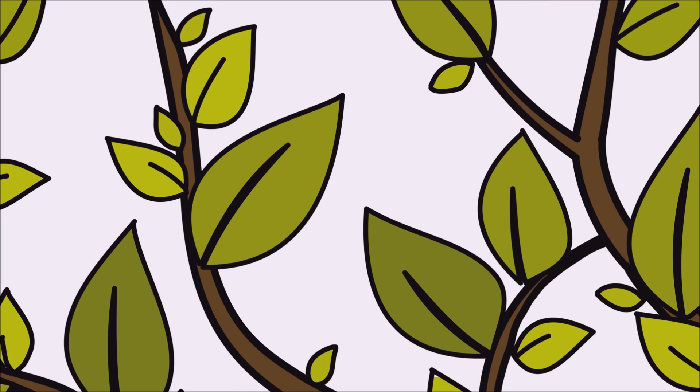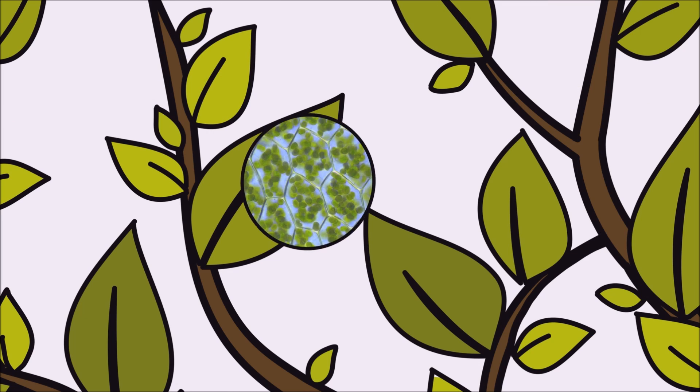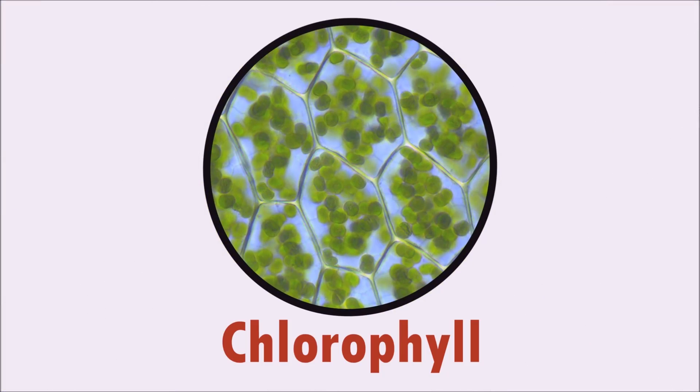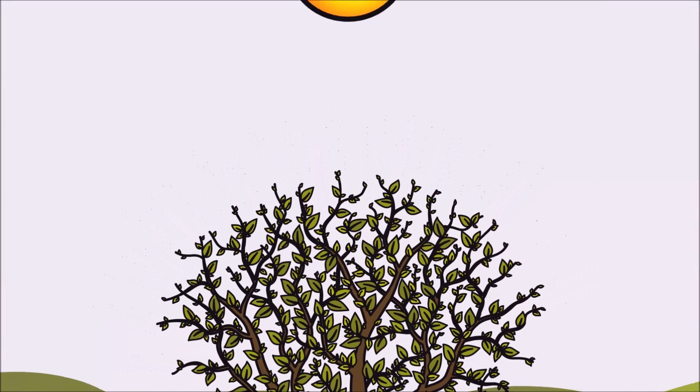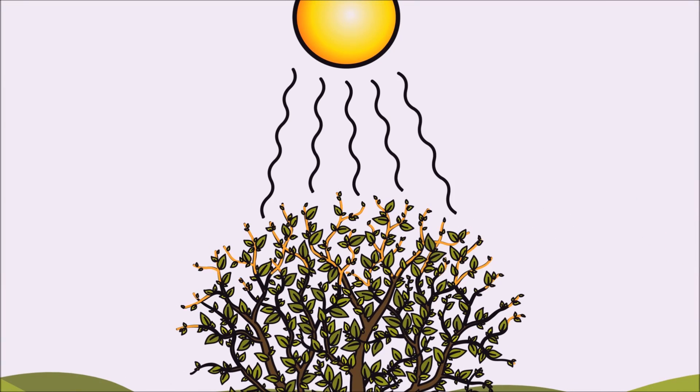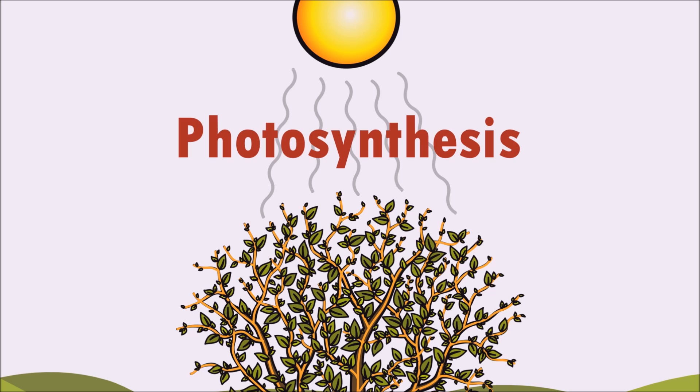This food-making process happens because of a chemical inside the leaves called chlorophyll. Chlorophyll is what gives leaves their green color. Chlorophyll also absorbs sunlight and converts it into sugar, which is stored inside the tree. This process is called photosynthesis.